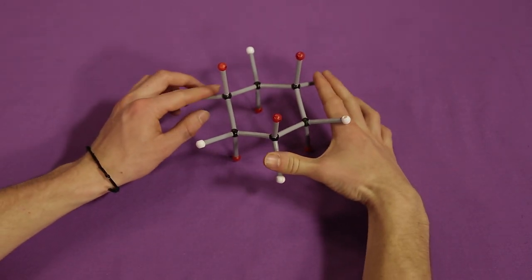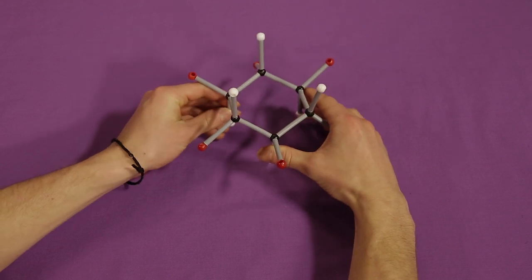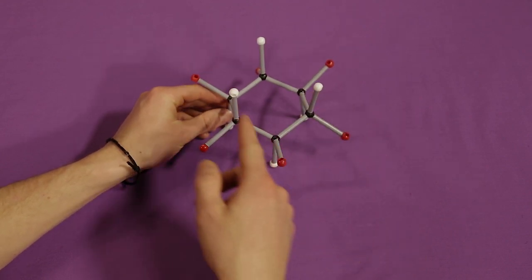This is useful when trying to find the most stable conformation of a cyclohexane ring that has substituents on it.